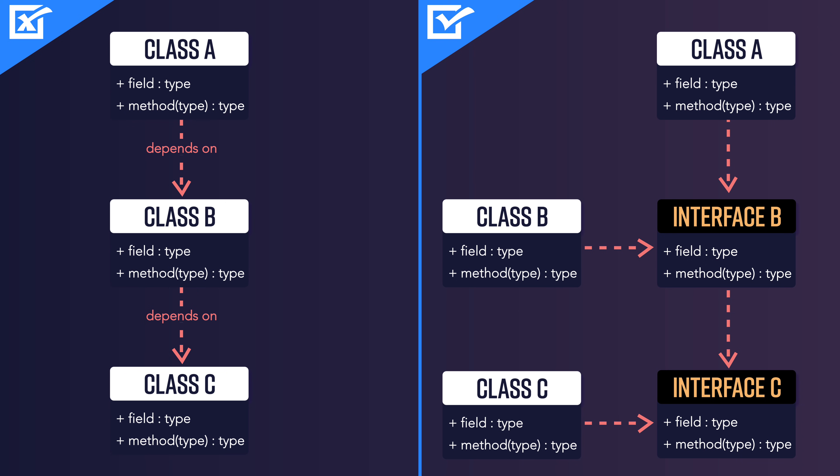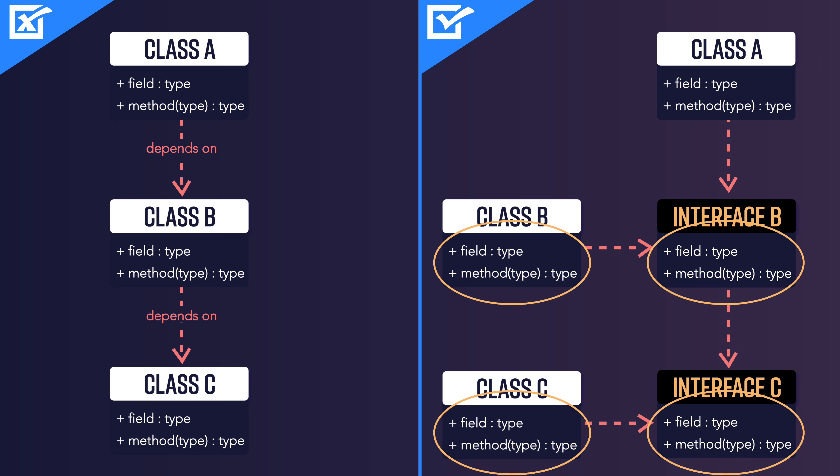Now, what happens? You can change the implementation of functions in class B or class C without changing the interfaces. Also, when someone is writing unit tests, it is very easy to mock these dependencies because the signatures of these functions are not changing — they are exposed by the interface, and it is easy to mock those interfaces. This is what the Dependency Inversion Principle is all about.